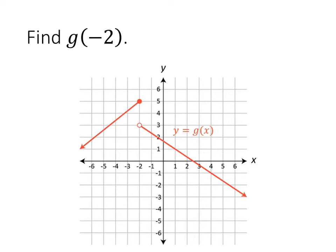In this problem, we're asked to find g(-2). In a normal-looking graph, what we would do is find negative 2 on our x-axis and go up or down on our function to find where the y-value is. But it looks like we've got two y-values — an open circle and a filled-in circle. The filled-in circle is where the actual y-value is; we ignore the open circle. So in this case, g(-2) equals 5.